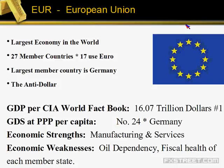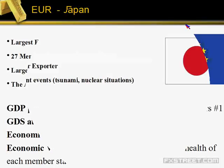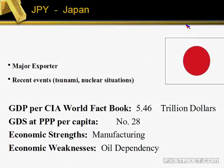The US dollar is the prime world currency, and very often the Forex is actually a game of USD against the world. The Euro is referred to as the anti-dollar because it will go directly opposite of the US dollar.